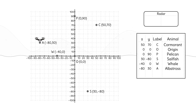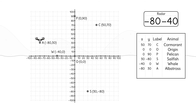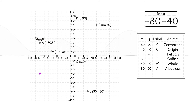While the drone is hovering there, Kamal's radar spots movement at the point (-80, -40). He doesn't want the drone to return this time. Let's graph the point (-80, -40). How far would the drone have to move to go from (-80, 30) to (-80, -40)?